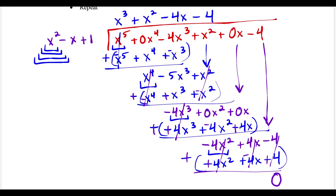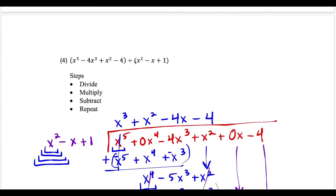Since the remainder is 0, these polynomials divide evenly. We can conclude the answer is x to the third plus x squared minus 4x minus 4.